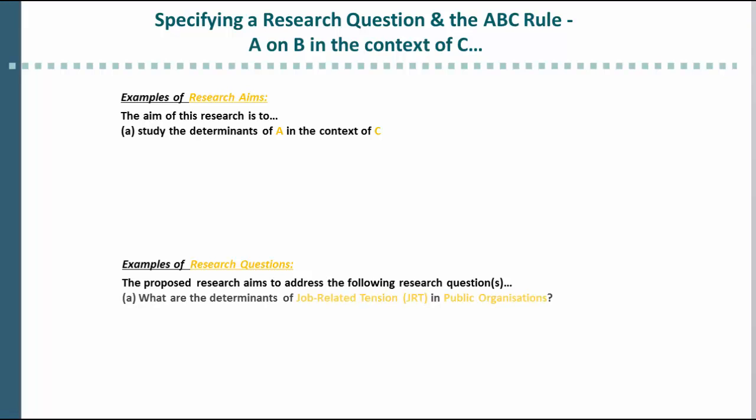A way to express this as a question would be, for example: what are the determinants of job-related tension (A) in public organizations (C)? Another template for a correctly formulated research aim is: the aim of this research is to study the consequences of A in the context of C — again, an implied B. The B is the consequences. A way to express this as a question might be: what are the consequences of job-related tension (A) in public organizations (C)?